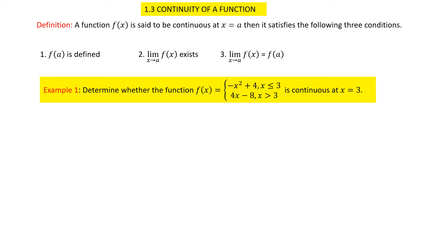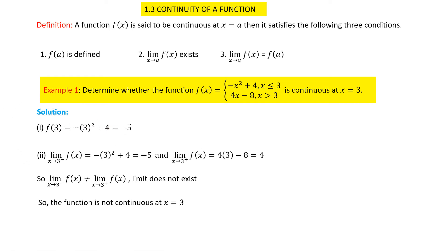Let us see one example. We have a function and we have to check whether the function is continuous at x equal to three. We start from condition number one — the function f at the point a should be defined. Here the point is three, so we replace x equal to three in the function. Since two functions are given, at x equal to three we consider the first segment, that is x less than or equal to three.